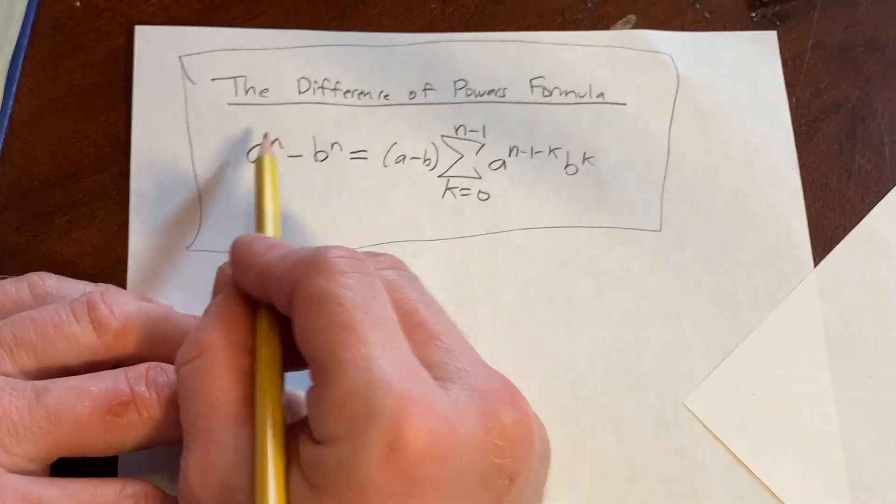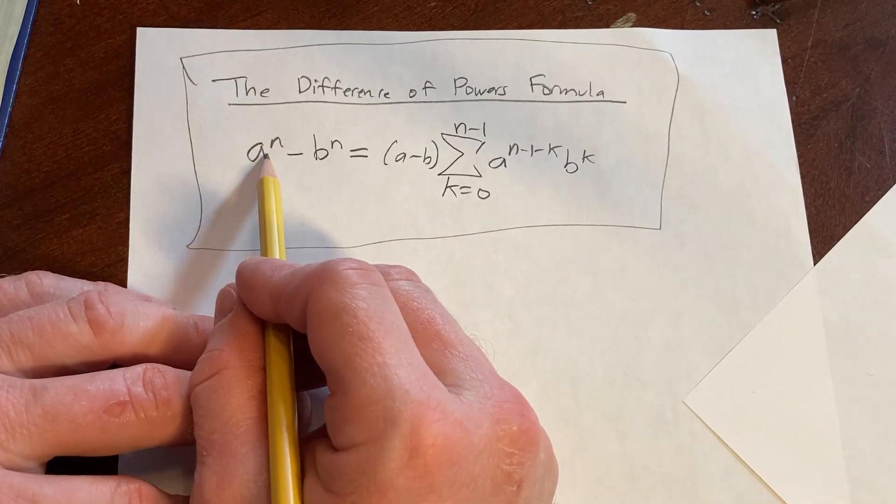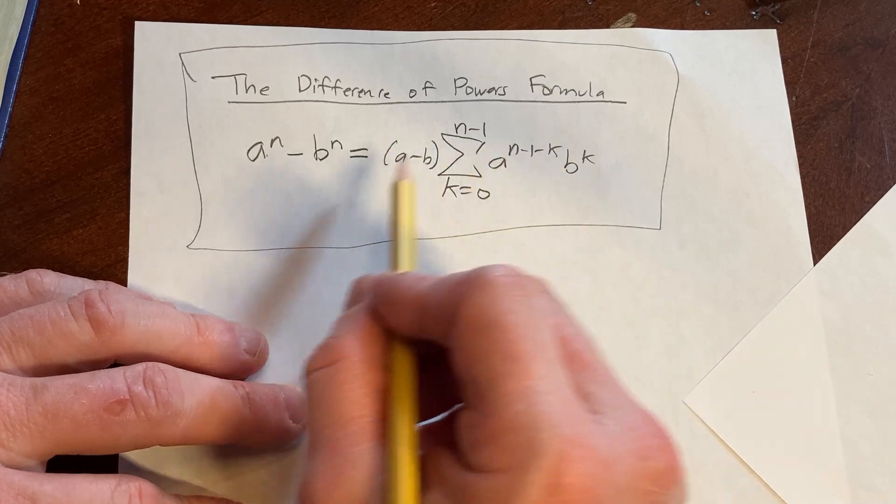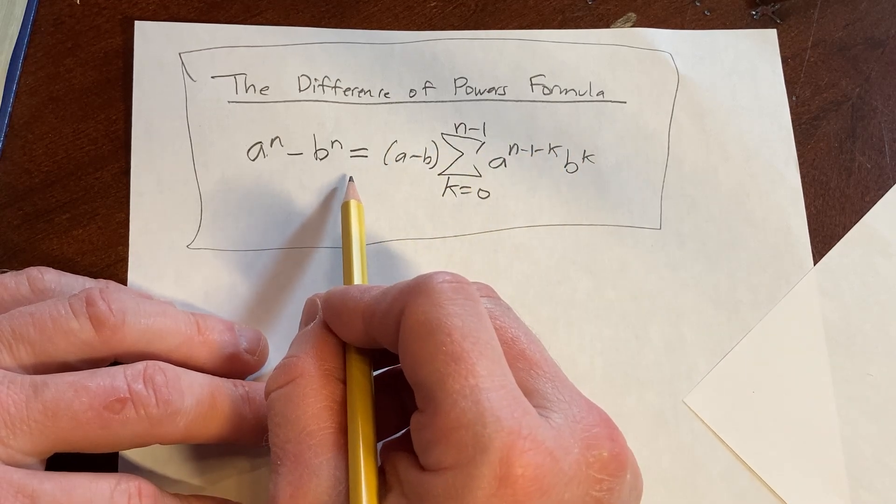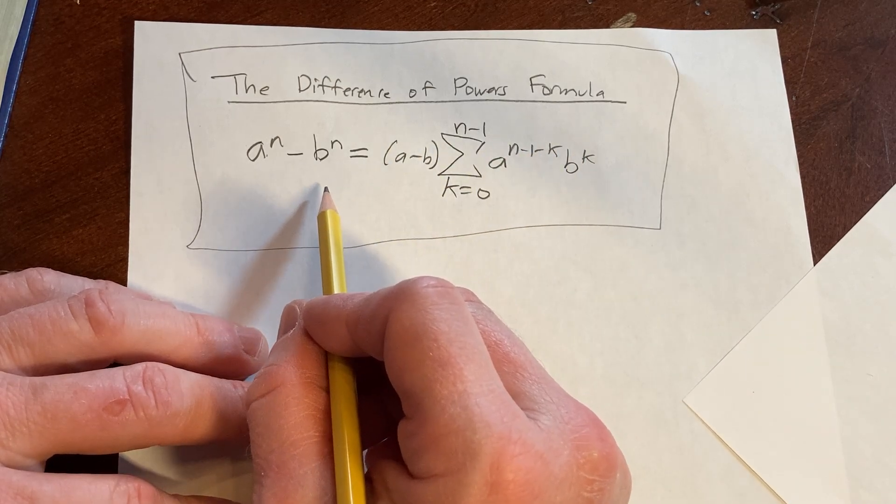For example, we can have a to the 5 minus b to the 5, and then you can apply this formula to work out the rest.